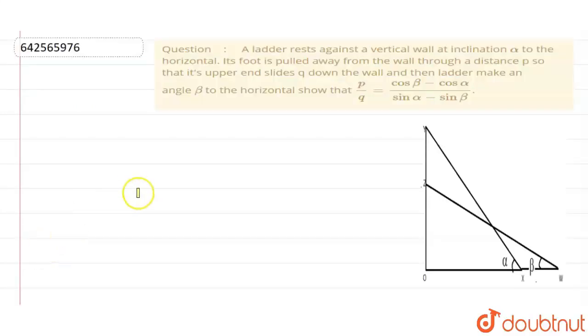Hello friends, today's question is: a ladder rests against a vertical wall at an inclination alpha to the horizontal. Its foot is pulled away from the wall through a distance p, so that its upper end slides down the wall, then making an angle beta to the horizontal. We need to show p by q equals cos beta minus cos alpha by sin alpha minus sin beta.